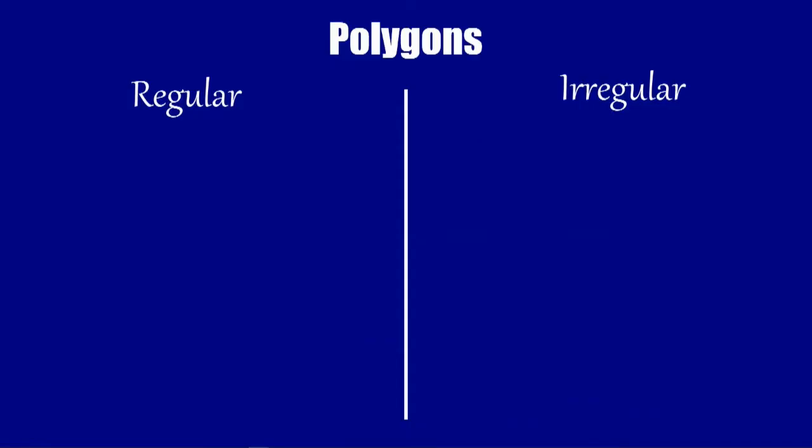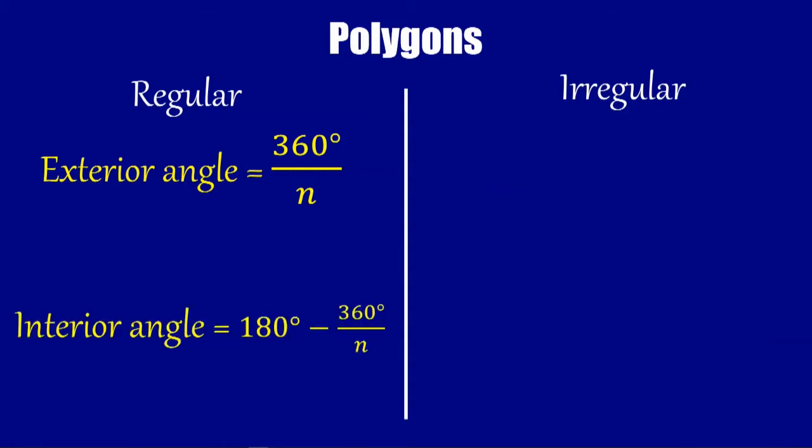So to sum up, for a regular polygon, the exterior angle is what you get when you divide 360 degrees, representing a full turn, by the number of angles or the number of sides that the polygon has. The interior angle of a regular polygon is 180 minus that 360 divided by the number of sides or the number of angles that the polygon has.